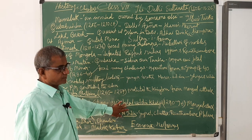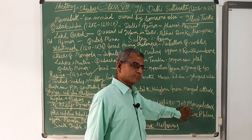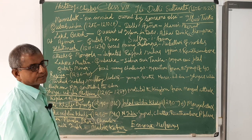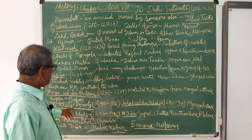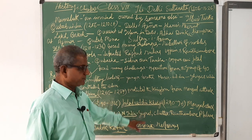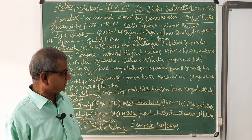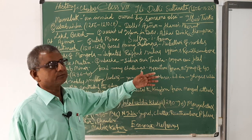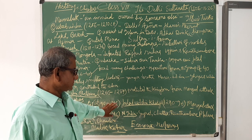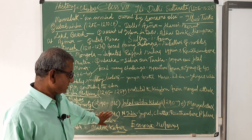The first ruler of the Khalji dynasty was Jalaluddin Khalji, who saved the kingdom from Mongol attacks and was very generous. His nephew was Alauddin Khalji. When Alauddin Khalji was returning after conquering Devgiri in South India, Jalaluddin went to welcome him, but during this time Jalaluddin Khalji was assassinated by Alauddin Khalji.